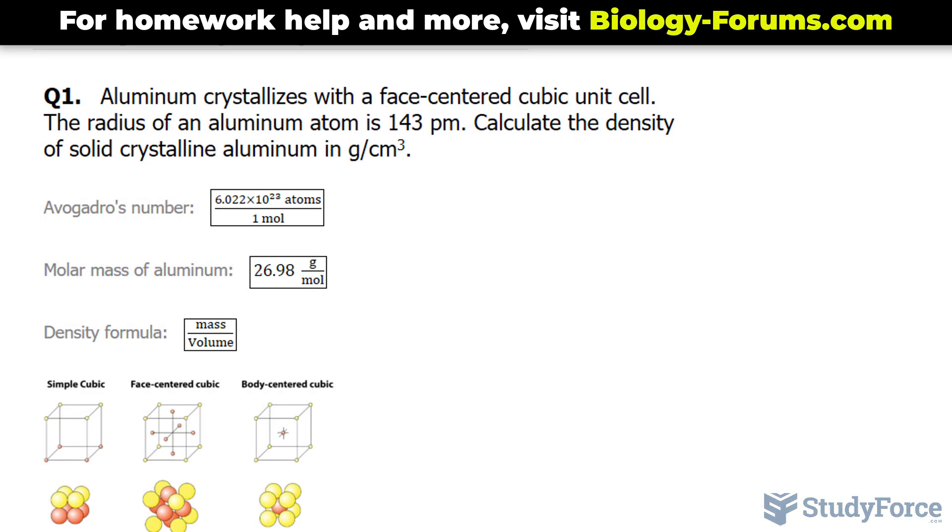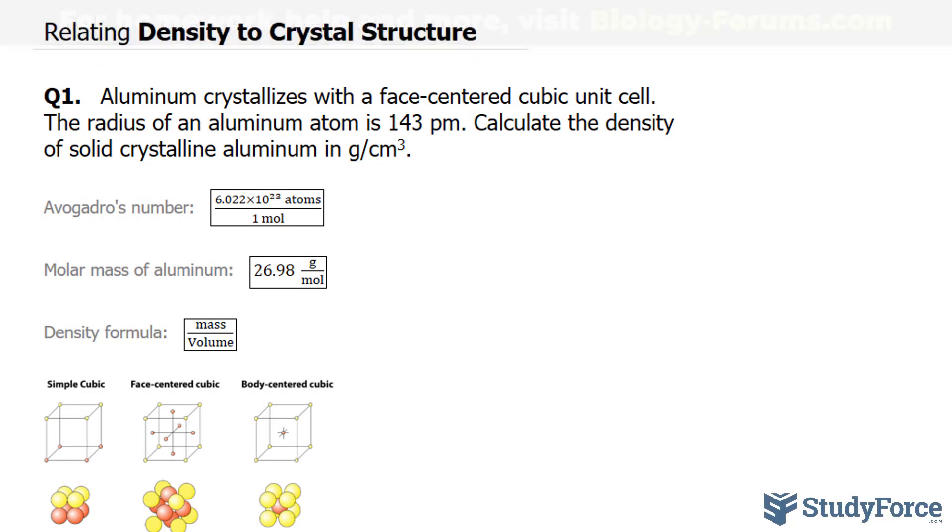So right from the get-go, we've been given the radius of the aluminum atom and its crystal structure. Notice here it reads face-centered cubic unit cell. We're being asked to find the density of the solid aluminum.